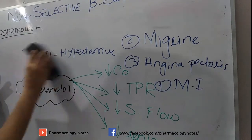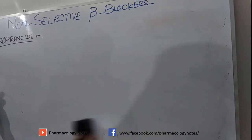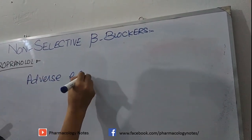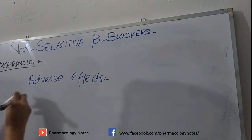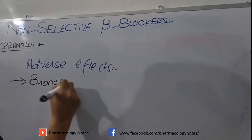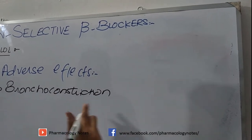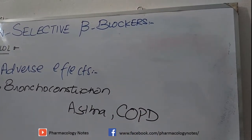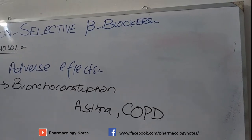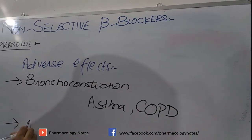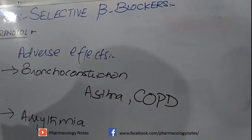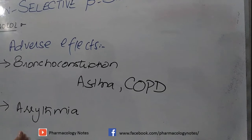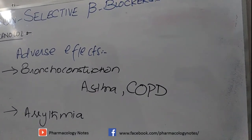The adverse effects of propranolol include bronchoconstriction, since it acts on bronchioles. Therefore, it cannot be given to patients with asthma or chronic obstructive pulmonary disease (COPD). It also can cause arrhythmias, as it interferes with baseline cardiac activity. To avoid rebound arrhythmias, propranolol should not be withdrawn suddenly — the withdrawal must be gradual.